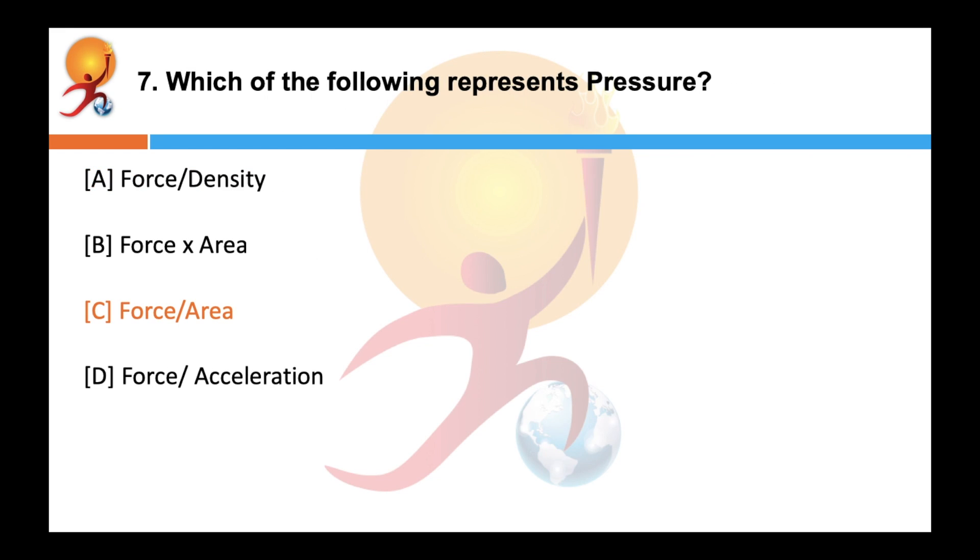Which of the following represents pressure? Correct answer is C. Force per unit area. So pressure is defined as a normal force acting per unit area. It is denoted by P. P is equal to force upon area. It is the physical force exerted on an object and the force applied is perpendicular to the surface of objects per unit area.